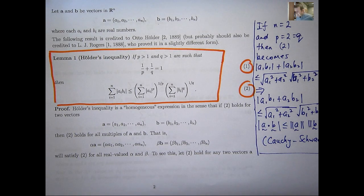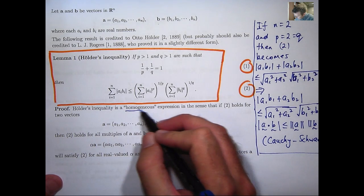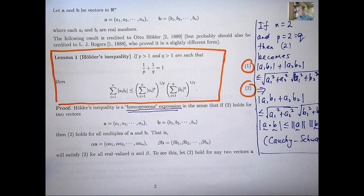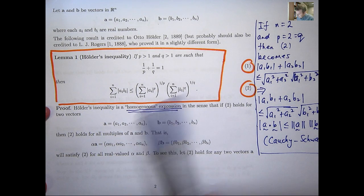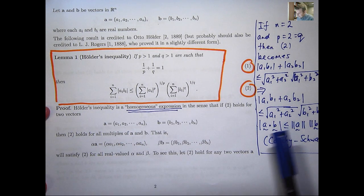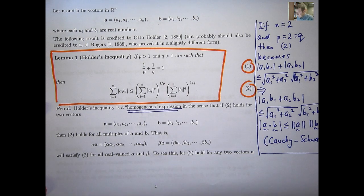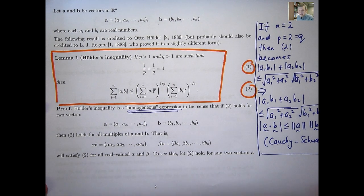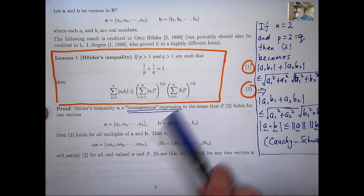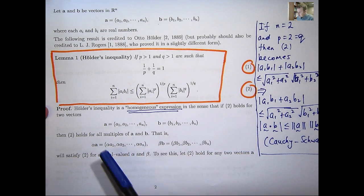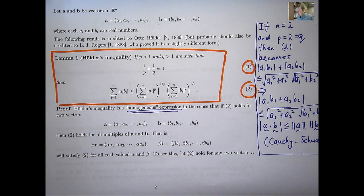The proof is in two stages. First, I claim that Hölder's inequality is a homogeneous expression in the following sense. If Hölder's inequality holds for two vectors A and B, then it holds for all scalar multiples of those vectors. Let alpha and beta be real scalars. If inequality 2 is true for all vectors A and B, then it's true for all vectors alpha·A and beta·B.